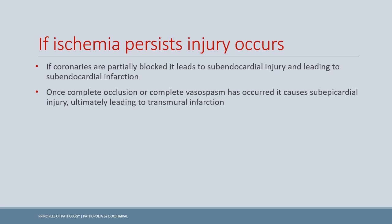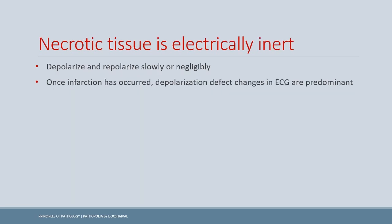If ischemia persists with partially blocked coronaries, it leads to subendocardial injury and ultimately subendocardial infarction. If coronaries are completely blocked, the sub-epicardial region also gets involved, leading to a transmural infarct. The necrotic tissue is electrically inert — the infarcted tissue neither depolarizes nor repolarizes properly. Infarction causes depolarization defects, while repolarization defect changes are seen in the ST segment and T wave in the form of inversion and depression.